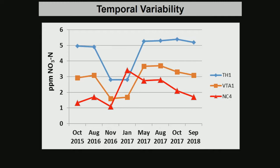We also see a lot of temporal variability. We've sampled over the course of the past three years — high levels in the dry seasons, end of the dry seasons, levels go down in the winters as a dilution effect, and come back up during the dry season. Th1 and VTA1 are tracking each other really well. NC4 is actually a stream with a rather large catchment, and it shows a somewhat more variable pattern.